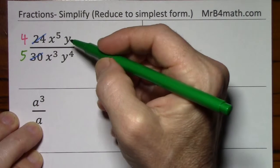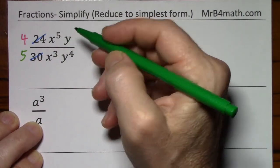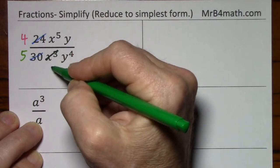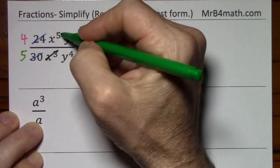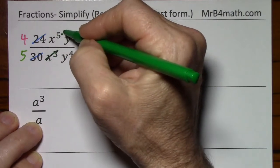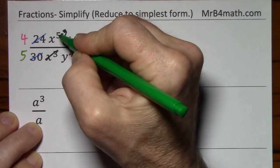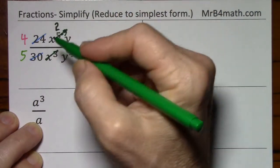Looking at the variables now. x to the fifth and x to the third. Cross out x to the third. This all becomes a 1. I don't have to write it. So long as I subtract 3 from 5. Again, usually I don't write this. 5 minus 3 is 2. So we have x squared.